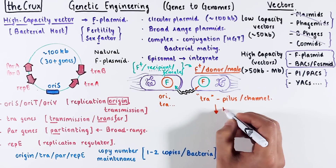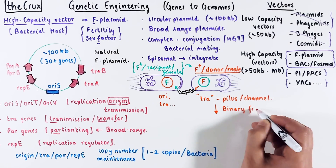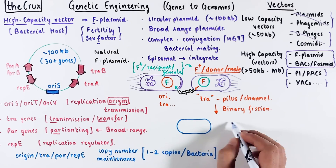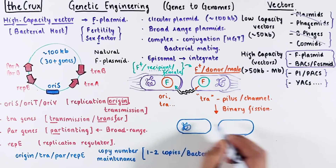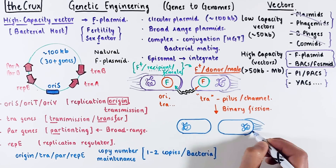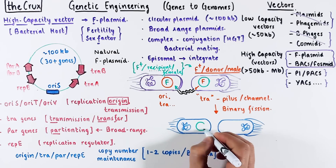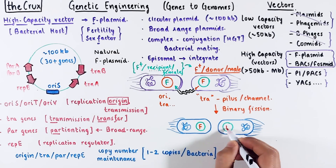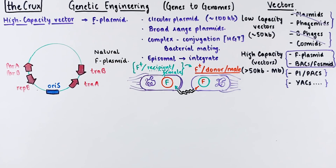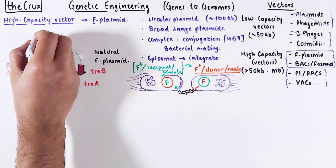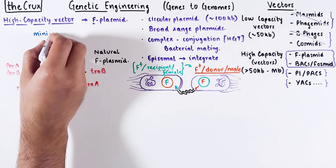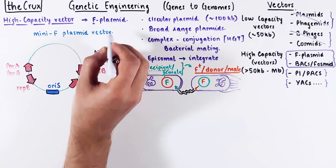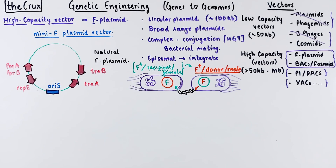The other mode of F plasmid maintenance in males is during binary fission, during which the F plasmid needs to be copied and partitioned among the daughter bacteria. This partitioning is ensured by parA and parB genes. Understanding how F plasmids work led to the development of the first high capacity bacterial host vector, called the mini-F plasmid vector.